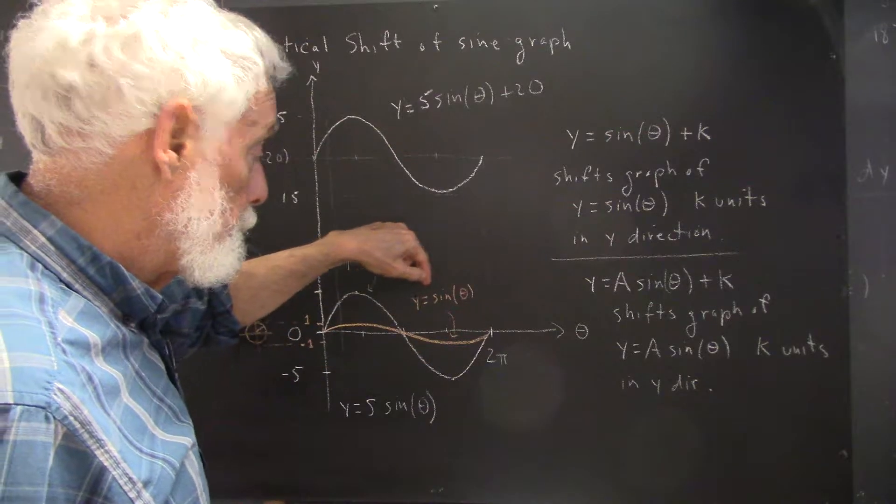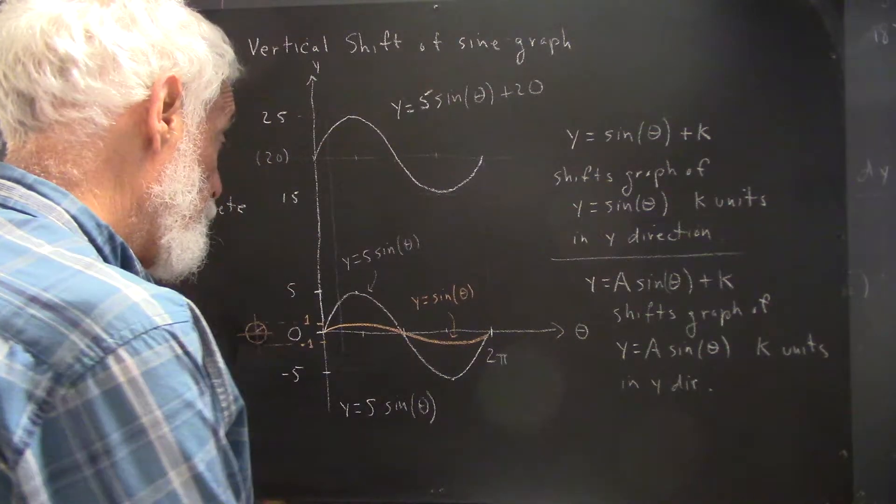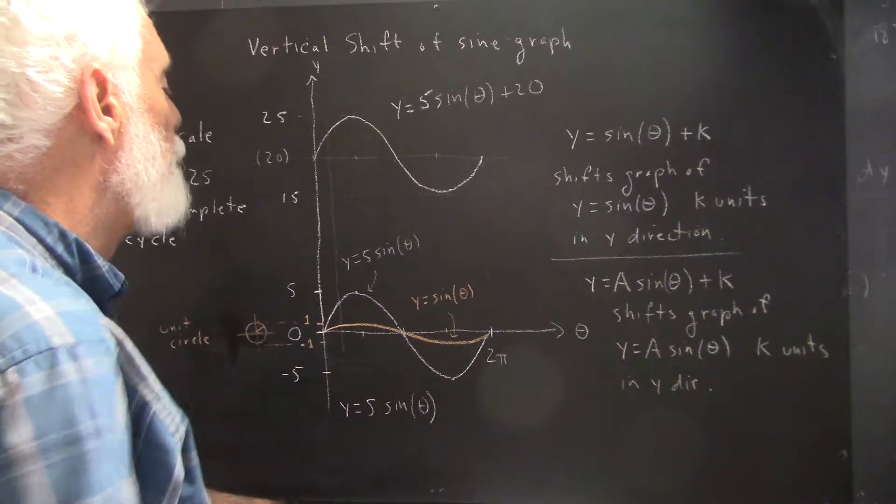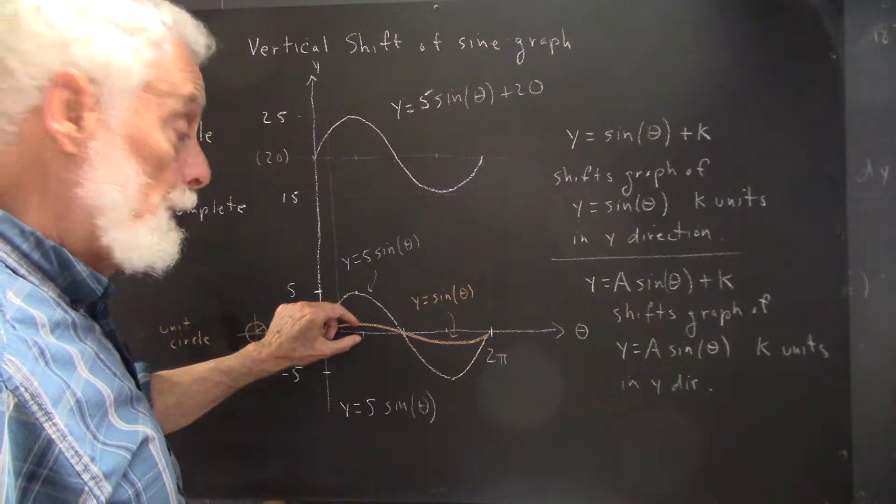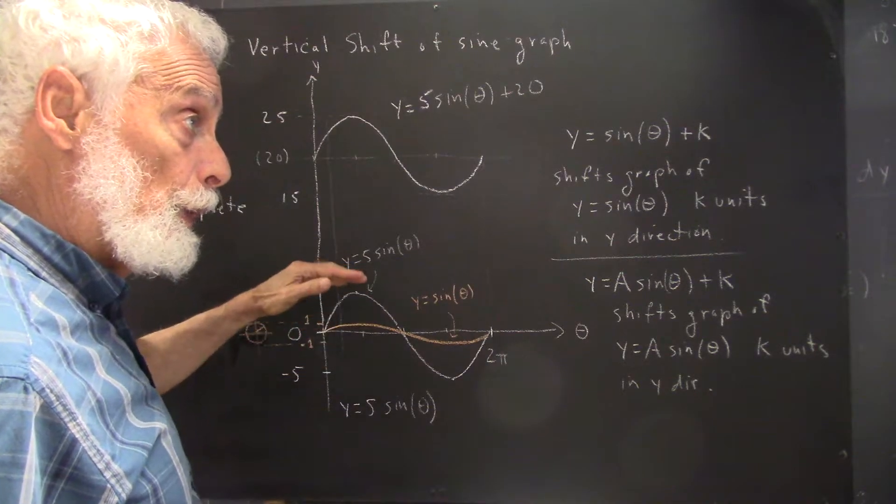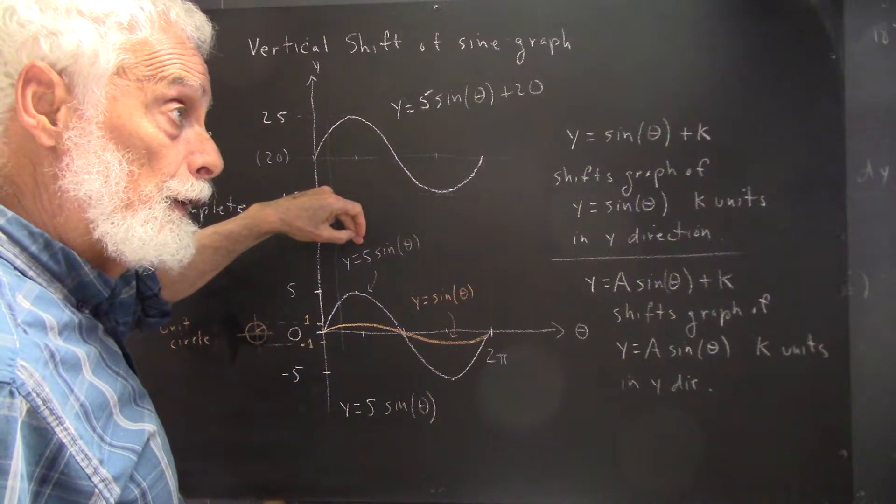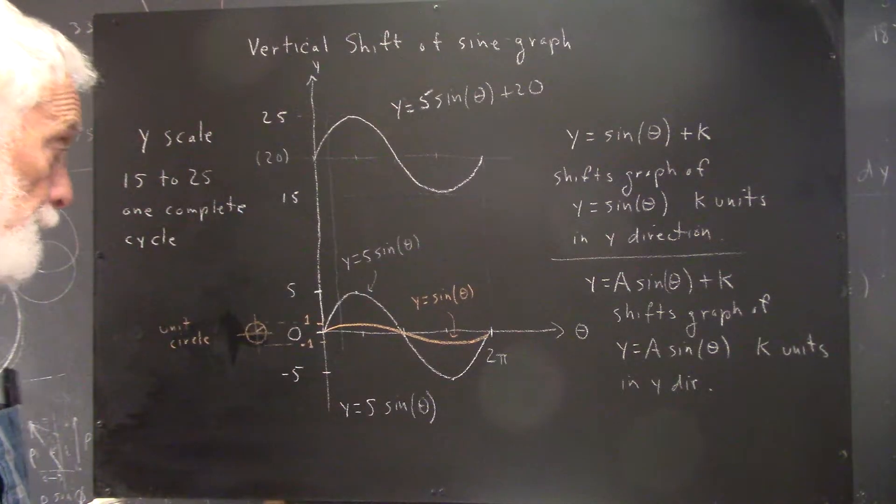We construct the graph of just y = plain old sin(θ). Then we use that graph, moving each point five times further from the y-axis to get the graph of y = 5sin(θ).